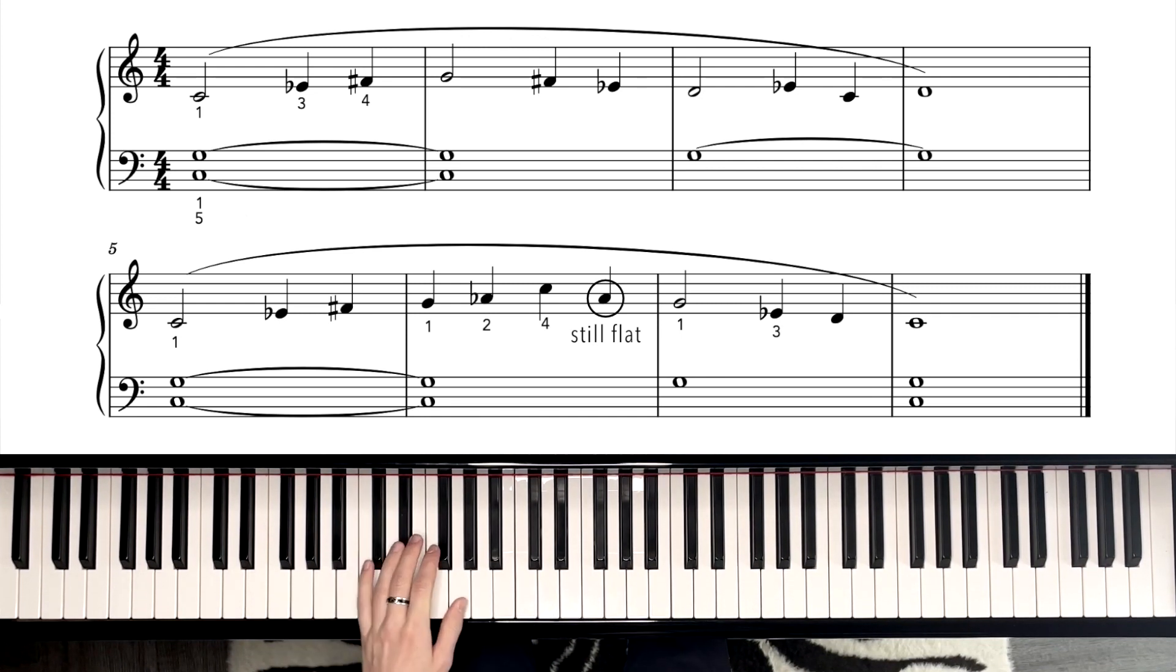So the left hand is very simple. It's a C-G held for two bars, one two three four, one two three four, then just the G, one two three four, tie, two three four, second line.